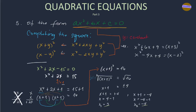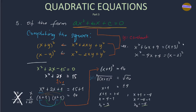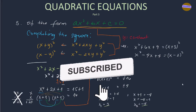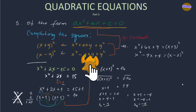Going back to our earlier examples, we now understand how x² + 6x + 9 results in (x + 3)², and how x² - 4x + 4 becomes (x - 2)², by performing these same operations. That's it for now. I'll see you next time for part 4 of quadratic equations. Please don't forget to subscribe, like this video, share this channel, and comment down below. Thank you so much. Bye bye.